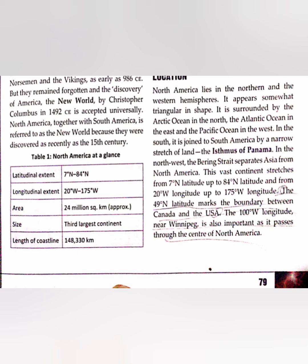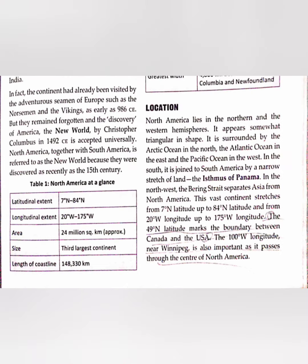The latitudinal extent of North America is 7° North to 84° North, and the longitudinal extent is 20° West to 175° West. The highest point in North America is Mount McKinley in Alaska, and the lowest point is Death Valley in California.